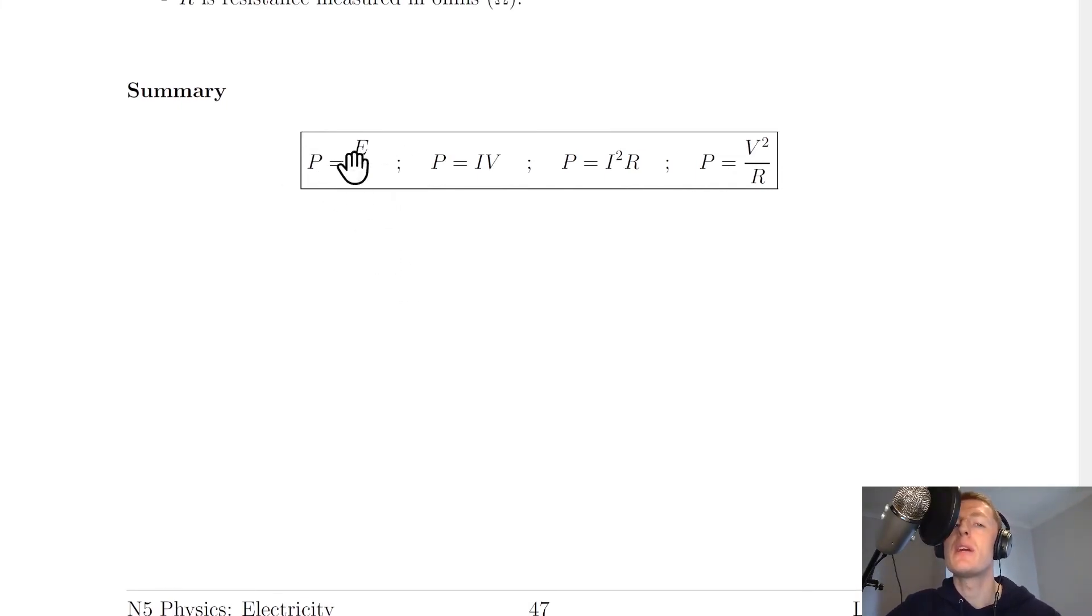We have P equals E over T, power equals energy over time. P equals IV, that's power equals current times voltage. P equals I²R, that's power equals the current squared times the resistance. And P equals V² over R, that's power equals the voltage squared divided by the resistance.